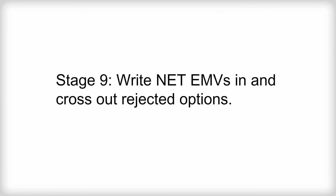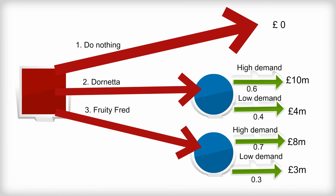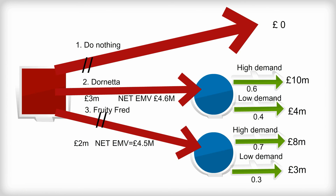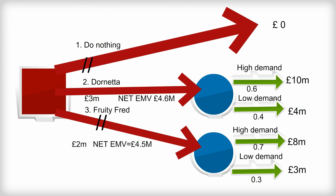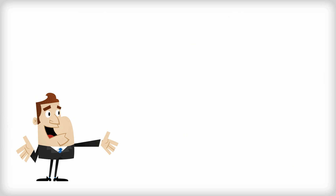Stage nine: once EMVs have been calculated, cross out each rejected option with two small diagonal lines. Stage ten: consider whether any qualitative factors should be taken into account, rather than just relying on what the decision tree indicates. Qualitative factors are based on opinion and preference, rather than just numbers.